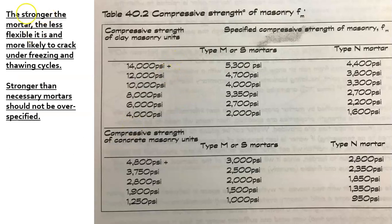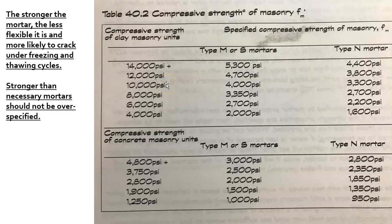Looking at some details for mortar: the stronger the mortar, the less flexible it is and the more likely it is to crack under freezing and thawing cycles. Stronger-than-necessary mortars should not be over-specified. There is a clear chart the engineer would reference — for example, if working with 10,000 PSI CMU units, specific mortar strengths apply. Stronger is not necessarily better; you need the appropriate-strength mortar for the specified block.